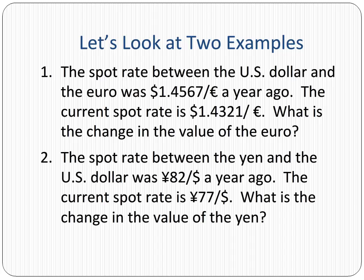In the second example, the spot rate between the yen and the US dollar was 82 yen per dollar a year ago. The current spot rate is 77 yen per dollar. What is the change in the value of the yen?